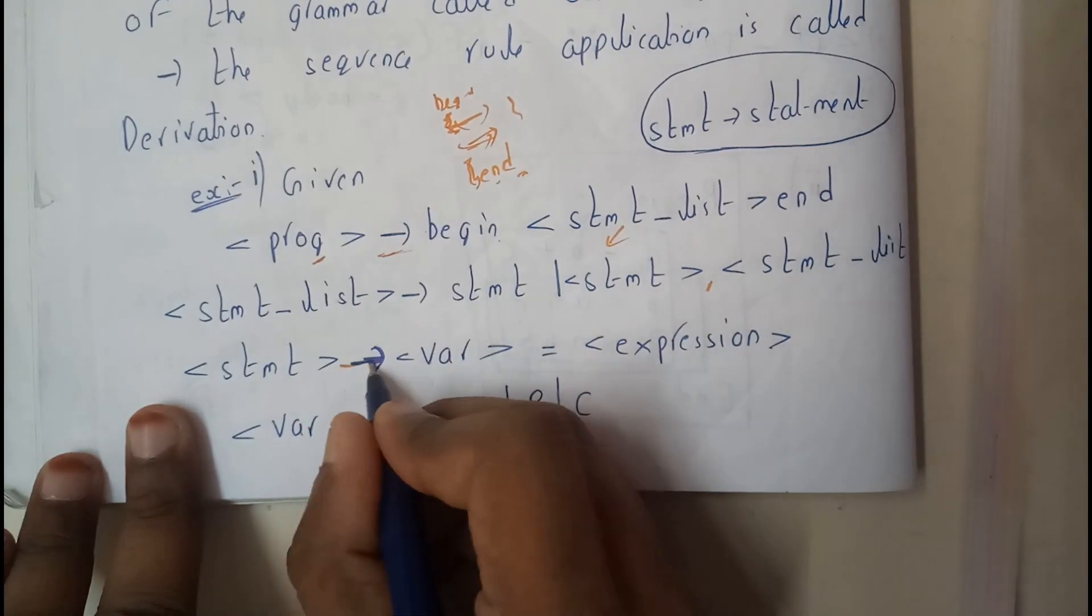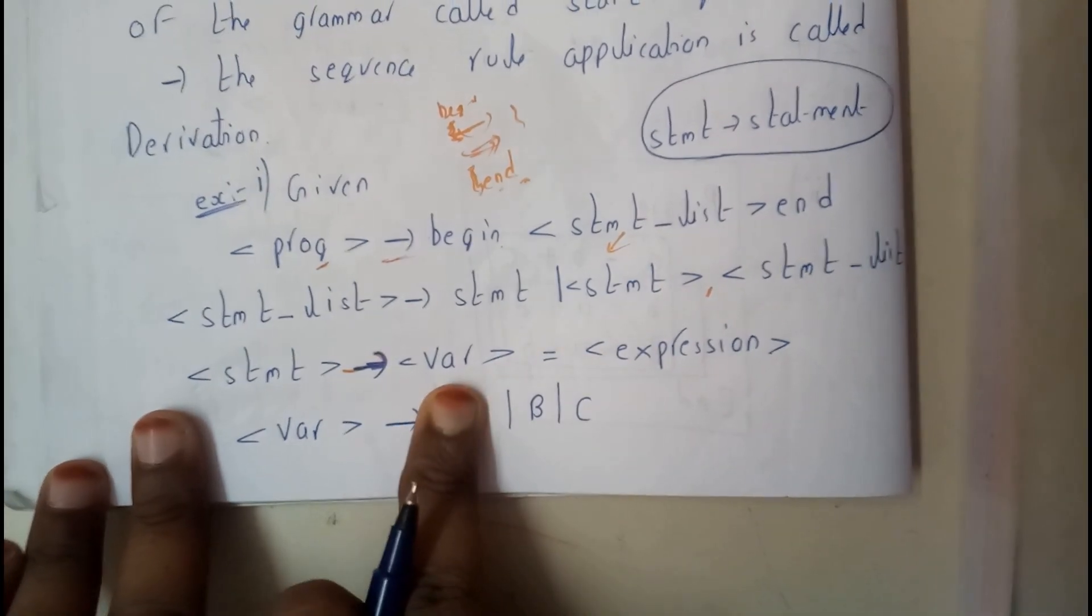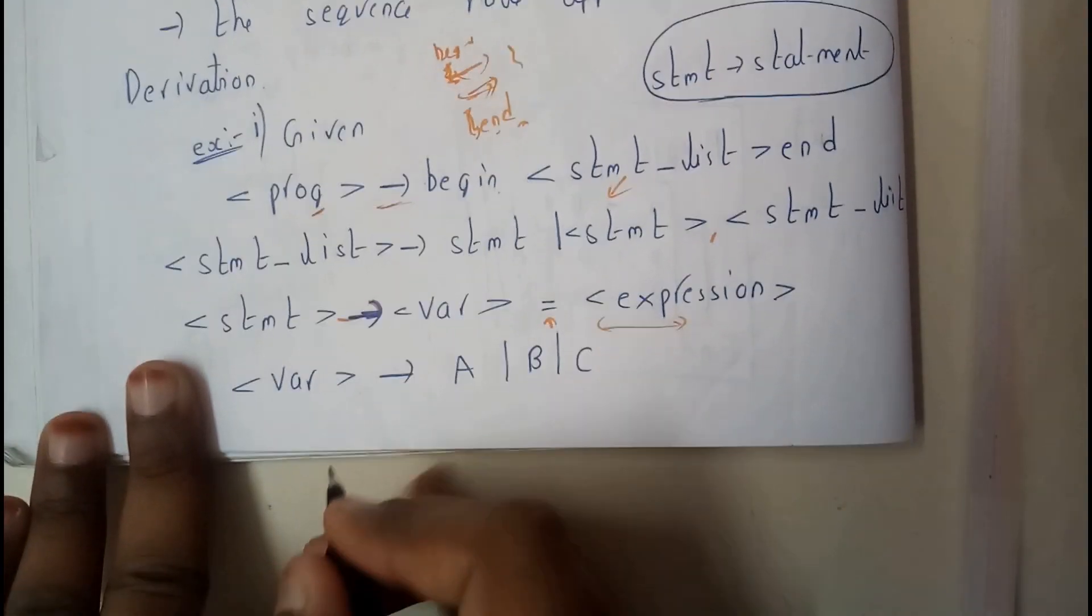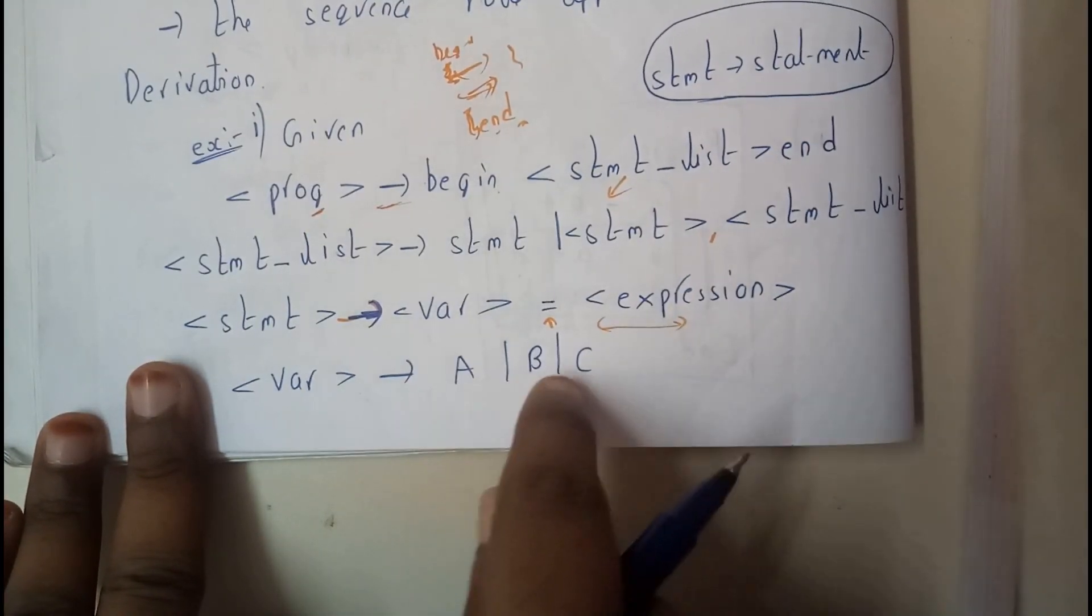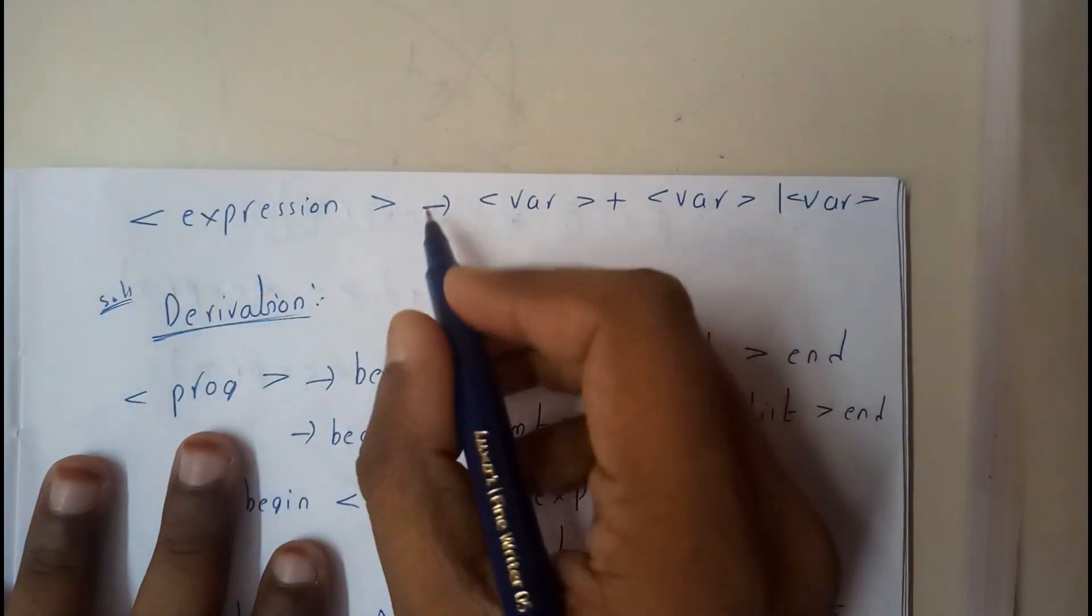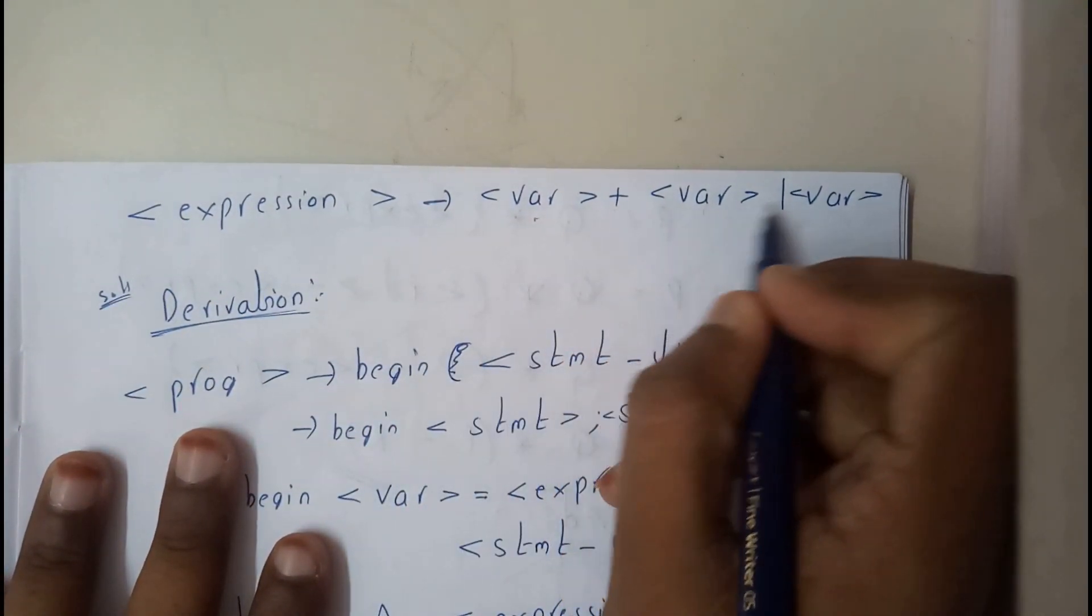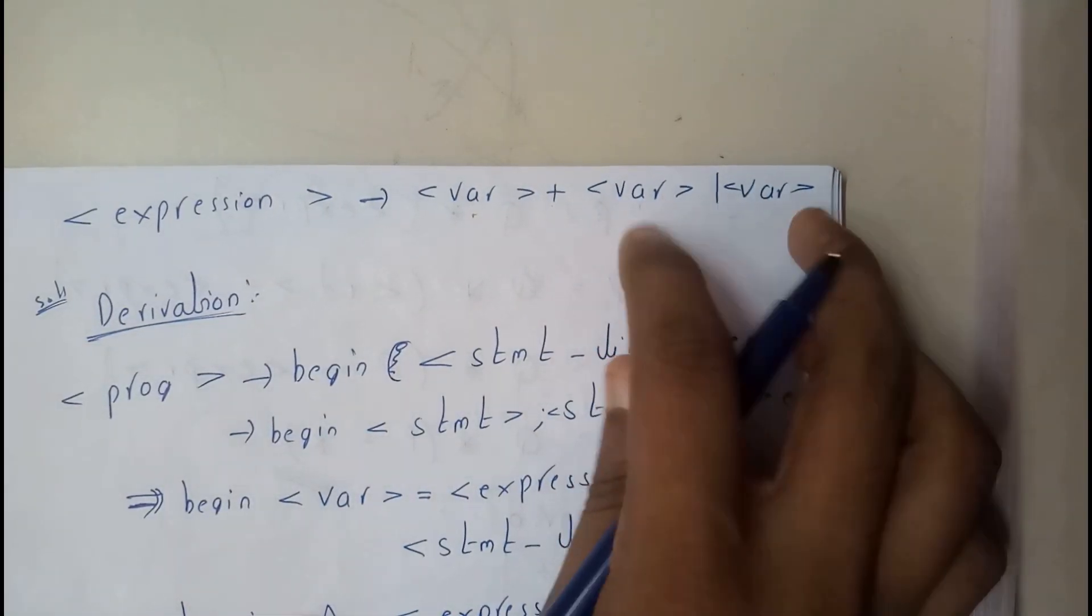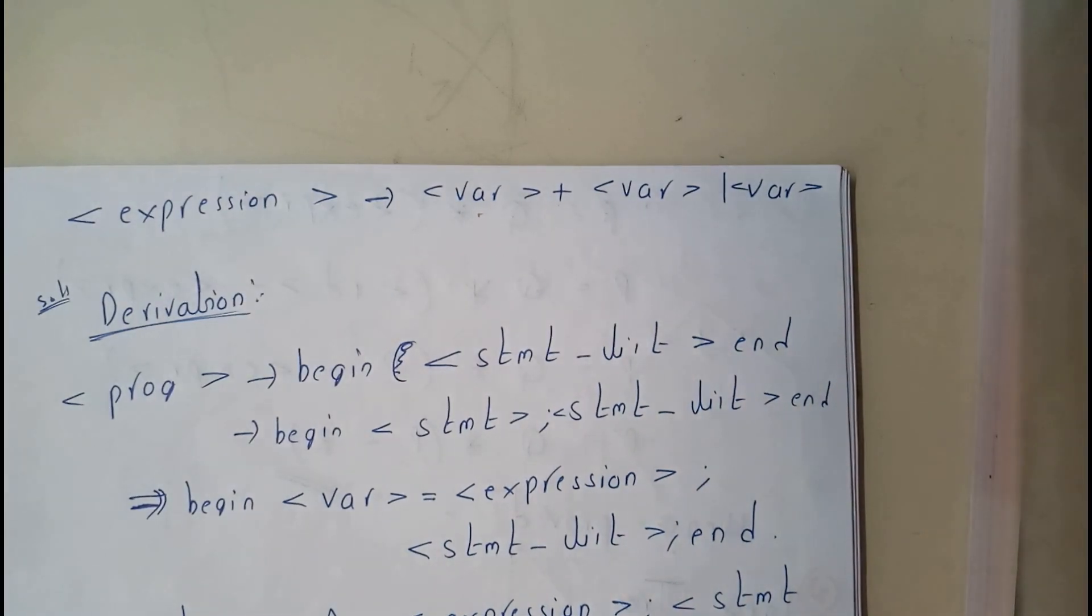If it is a statement, what will it have? It will have a variable with an assignment operator and an expression. Let's assume the variable as A, B, or C - there are three variables. For the expression we can assume it as variable 1 plus variable 2 plus variable 3, or we can place plus or minus among those two variables.